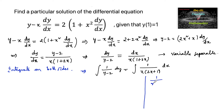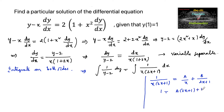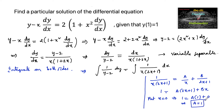We write 1 upon x times 2x plus 1 as A upon x plus B upon 2x plus 1. Then 1 equals A times 2x plus 1 plus B times x. By substituting x equals 0, we get 1 equals A times 1 plus 0, so A equals 1.